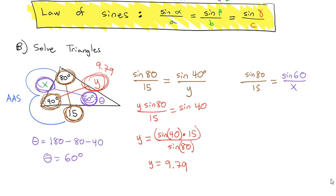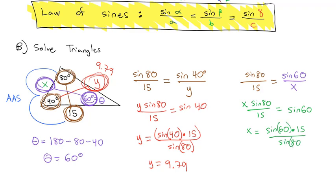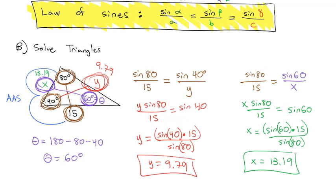We solve it in much the same way: multiply both sides by x, leaving behind sine of 60, then get x alone by multiplying sine of 60 by the reciprocal, times 15 over sine of 80. Making sure to close parentheses on the sine each time, the calculator gives us the missing side x equals 13.19. We've now solved for the two missing sides and the missing angle of our triangle.